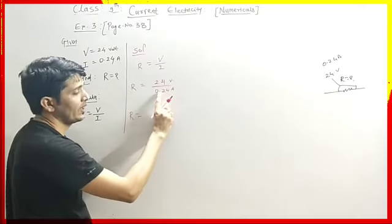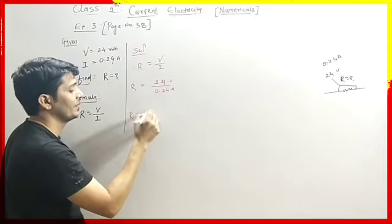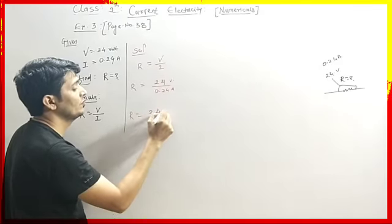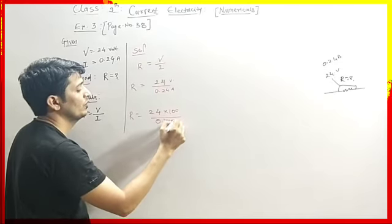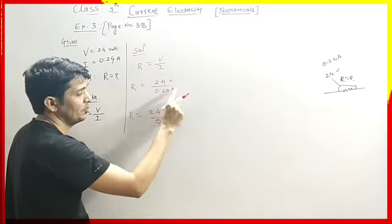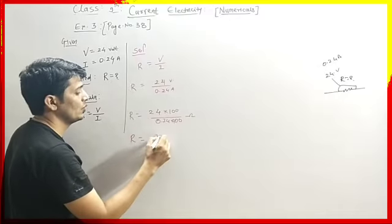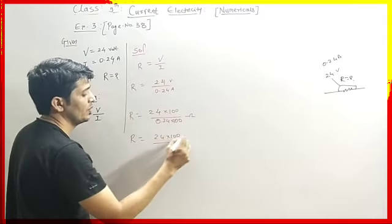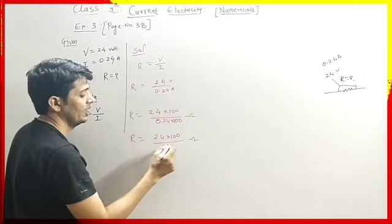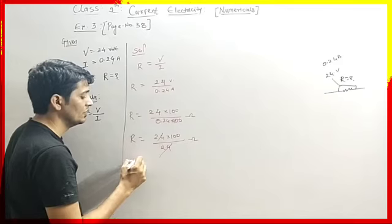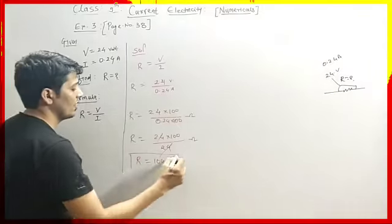We have to cancel the decimal point. We multiply both the numerator and denominator by 100. So R equals 24 × 100 divided by 0.24 × 100. Multiplying 0.24 by 100, we get 24. So 24 and 24 will cancel, and R equals 100.